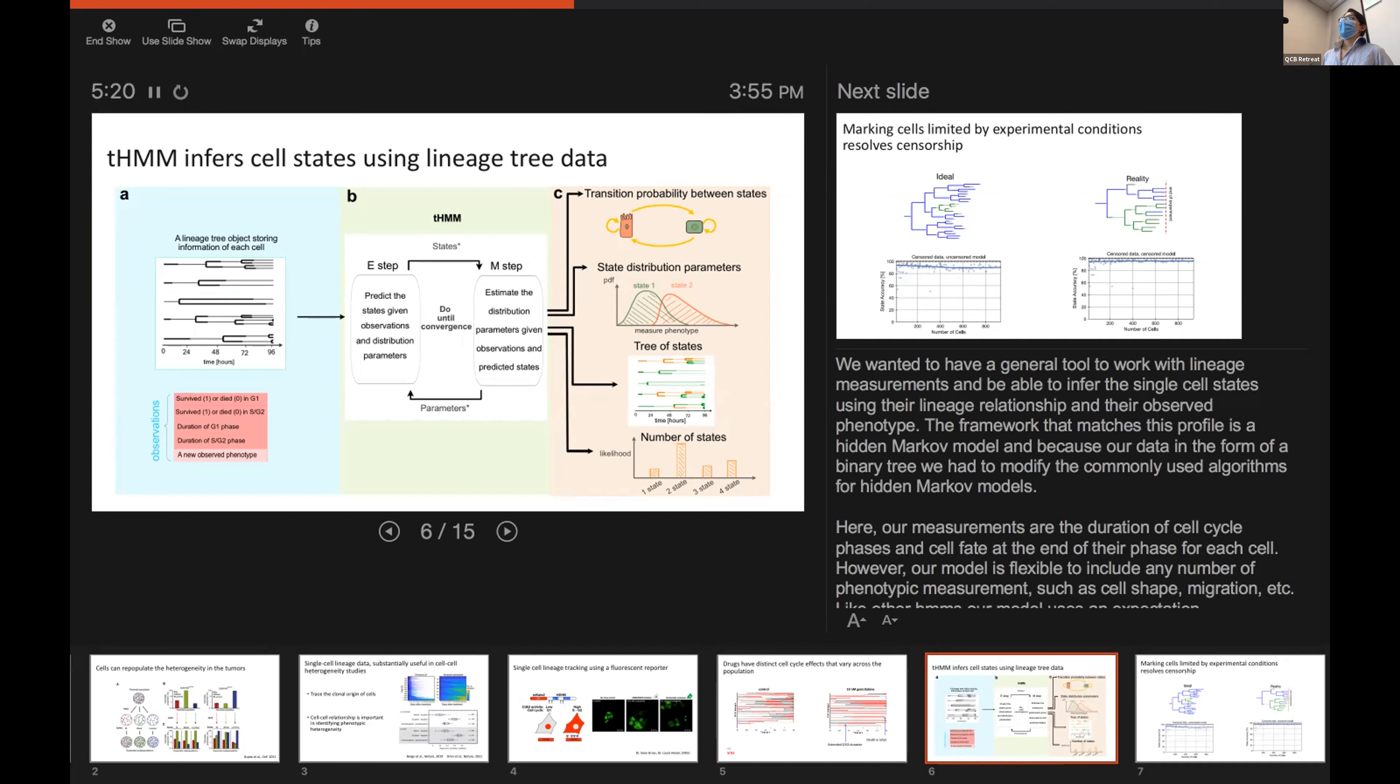The observations that we have are the duration of G1 and S/G2 phases, and also the fate of cells at the end of each of these phases. For example, whether cells made it to the end of G1 and they transition to G2 or they just die in G1.